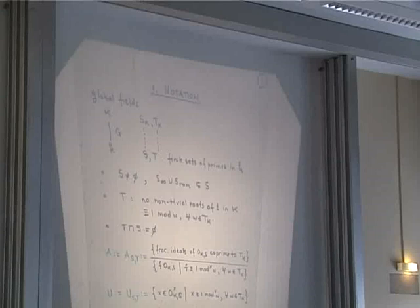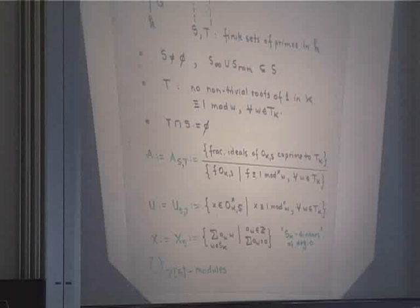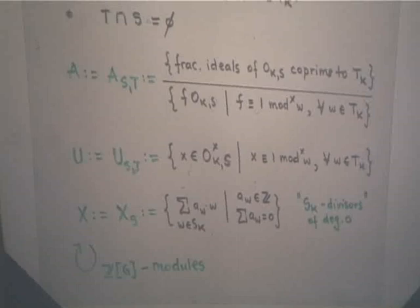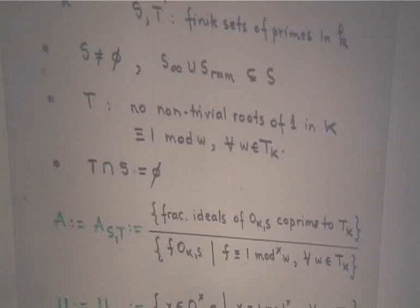I want S to be non-empty and to contain at least all the infinite (Archimedean) primes and the primes which ramify in this extension, and possibly other primes. I want T to be large enough so that there are no non-trivial roots of unity in the top field which are congruent to 1 modulo every single prime in T_K. For example, if T contains two primes of different residual characteristic, that implies right away that there are no such roots of unity. I also want T and S not to touch one another, so their intersection is empty.